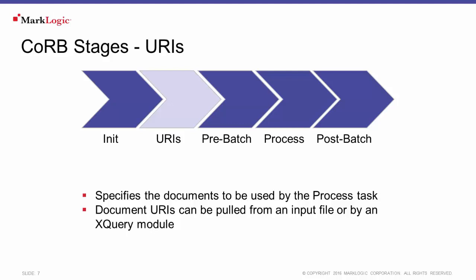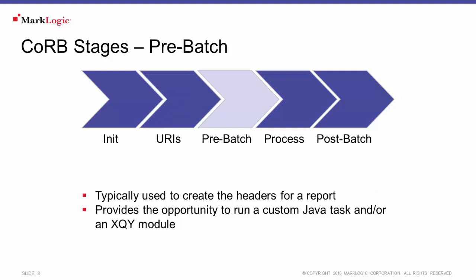The URI stage can create the list either from an input file or by running an XQuery module. The pre-batch stage runs just before the process stage and is generally used to create the headers when generating a report. If you are performing a transformation, this stage would generally be skipped. Pre-batch can run either a custom Java task or an XQuery module.